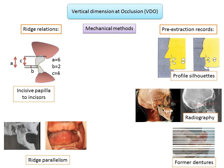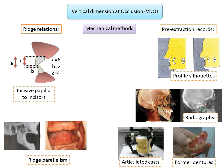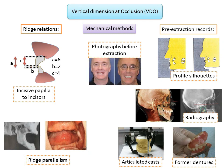If the patient's existing denture is available, a Boley gauge is used to measure the distance between the borders of the maxillary and mandibular dentures when in occlusion. Articulated casts: when the patient is dentulous, the maxillary cast is mounted in the articulator using a facebow transfer. Profile photographs taken before extraction in maximum occlusion can also be used, as the patient can easily maintain this position during photographic procedures.